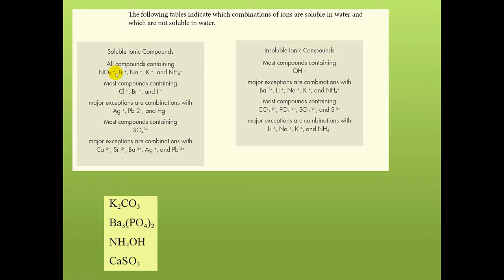Your soluble ionic compounds include all compounds that contain nitrate ion, lithium, sodium, potassium, and ammonium ions. Most compounds that contain chloride, bromide, and iodide ions are soluble, with the exceptions of silver, lead(II), and mercury. Most compounds that contain sulfate ion are soluble, with exceptions: calcium, strontium, barium, silver, and lead(II) sulfates. For insoluble ionic compounds: most compounds that contain hydroxide ions are insoluble, with the exception of lithium, potassium, sodium, ammonium, and barium ions. Most compounds that contain carbonate, phosphate, sulfite, and sulfate ions are insoluble; major exceptions are those containing lithium, sodium, potassium, and ammonium ions.